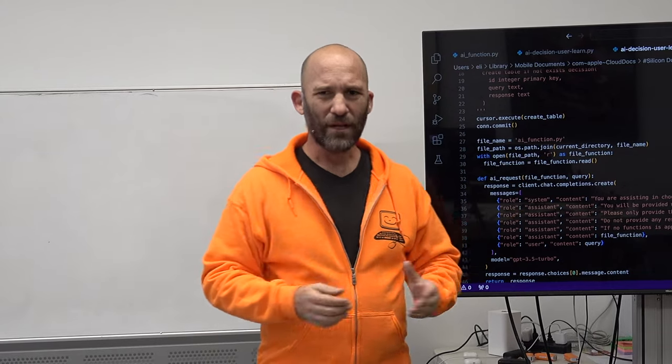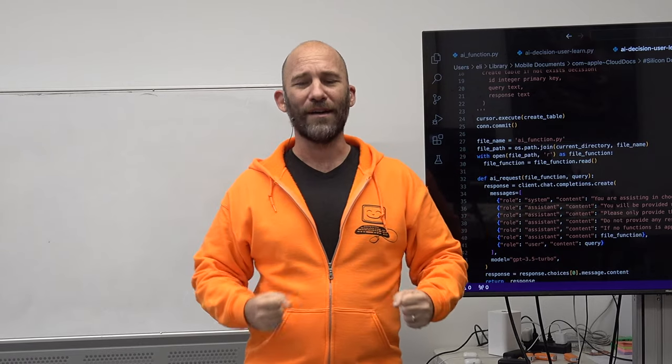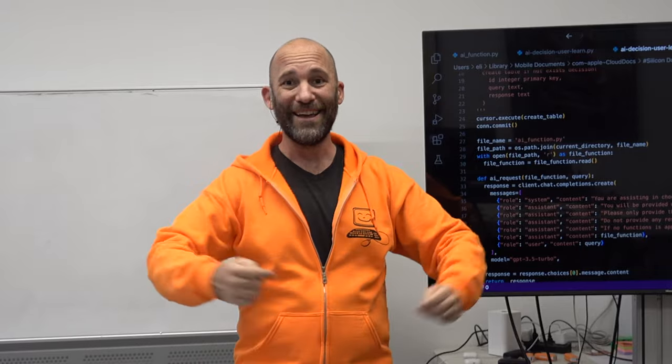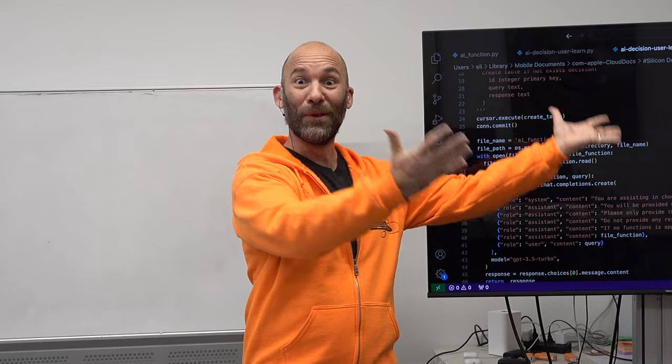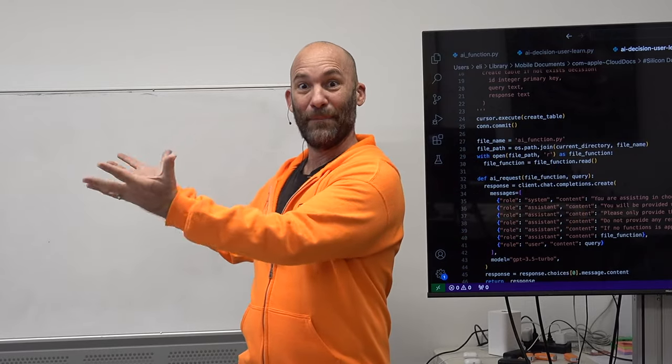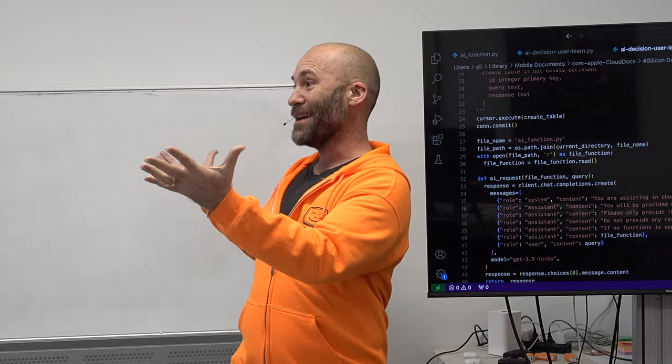Welcome back. I am Eli the Computer Guy, and in today's class I am going to show you how you can manually train your AI-powered talking computer. This is the fourth class in a series where our goal at Silicon Dojo is to create a robot that can track Lewis Rossman, so we can send it to Apple and they'll pay us a billion dollars. The problem is Lewis Rossman is real, and Apple has a lot of money.